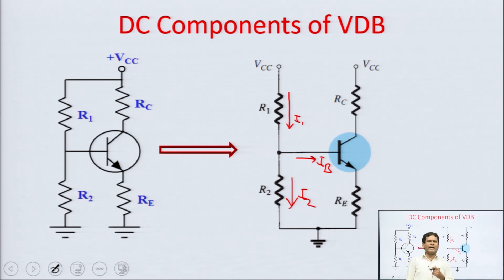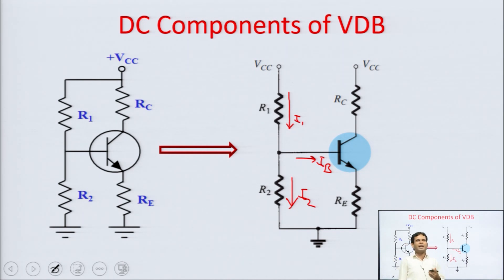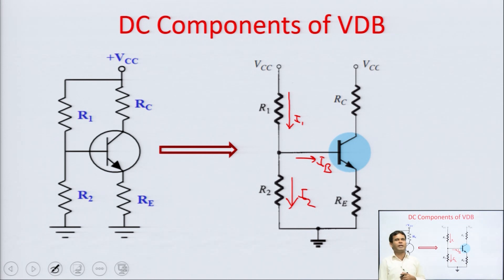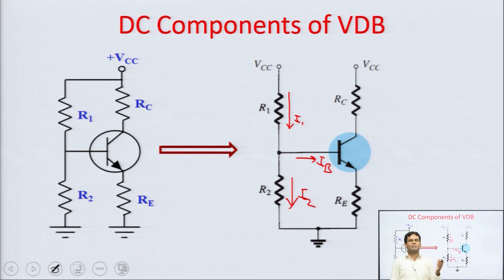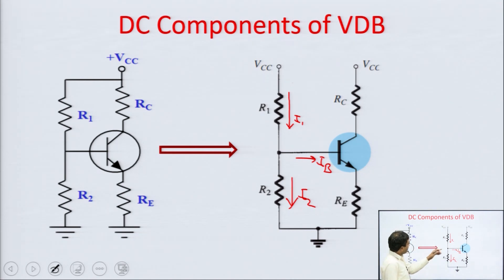To analyze this circuit there are two methods: one is the exact analysis and the other is the approximate analysis. In exact analysis we apply Thevenin's theorem, which converts the whole circuit into a Thevenin equivalent circuit having two components — Thevenin resistance RTH and Thevenin voltage ETH — connected in series. In approximate analysis we assume base current IB equal to zero, subject to a condition I will discuss later.